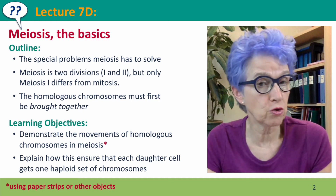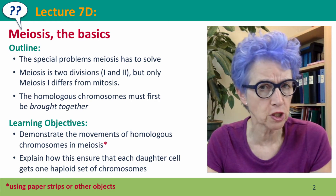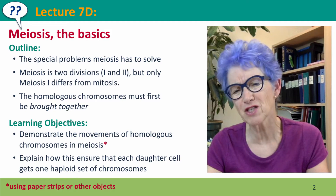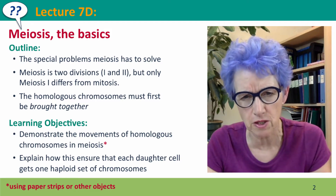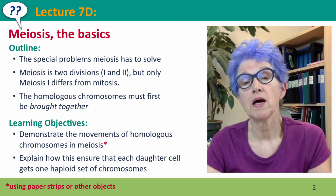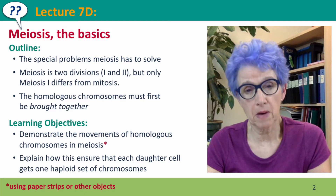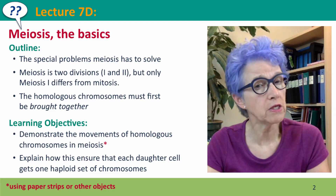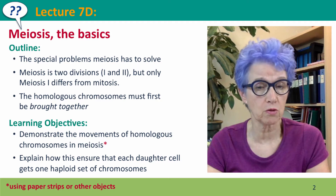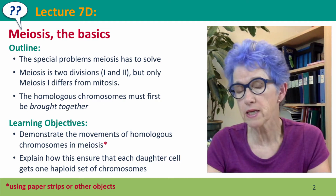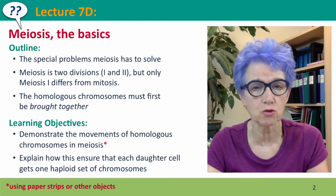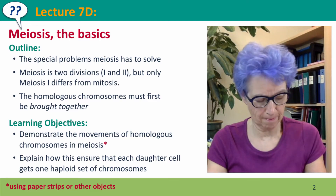Meiosis is two divisions, but we'll focus almost entirely on the first division because the second division is basically identical to mitosis. The first problem that meiosis has is going to be solved by bringing the homologous chromosomes together so they can be treated as pairs, in the same way that mitosis treats the sister chromatids.